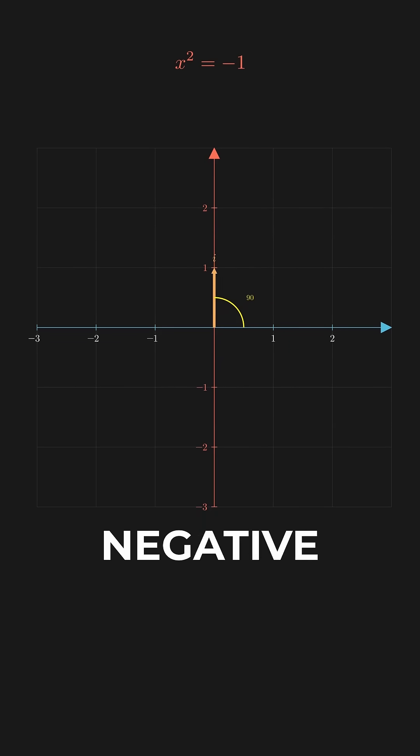Multiply by i again, you get negative one, since i squared is negative one. Multiply by i again, you get negative i, because negative one times i is negative i. And multiply by i again, you get one, because negative i times i is one.